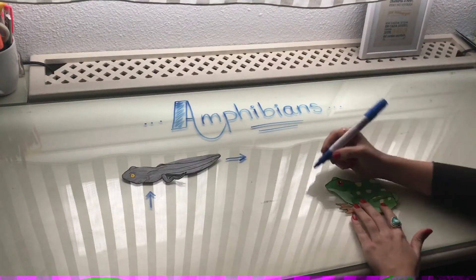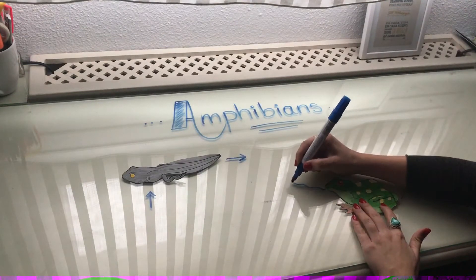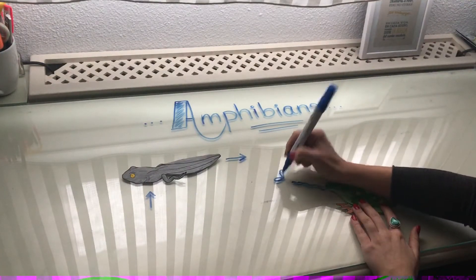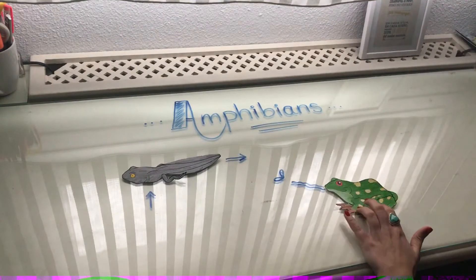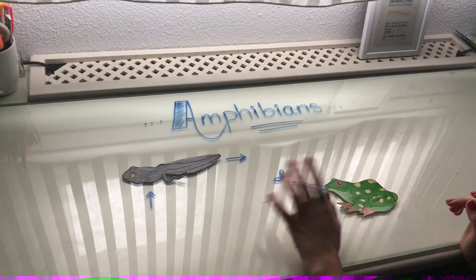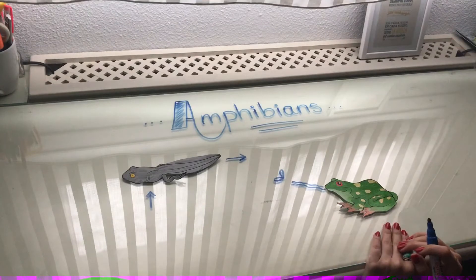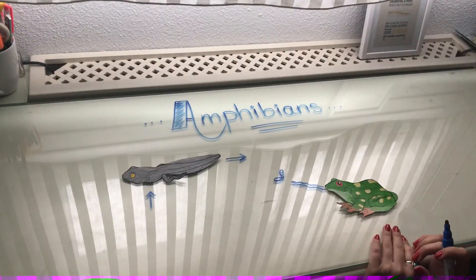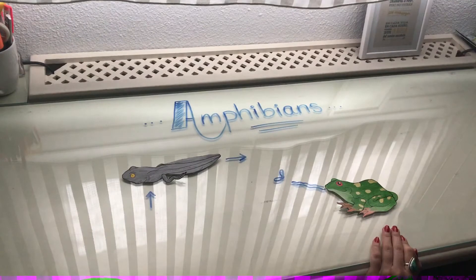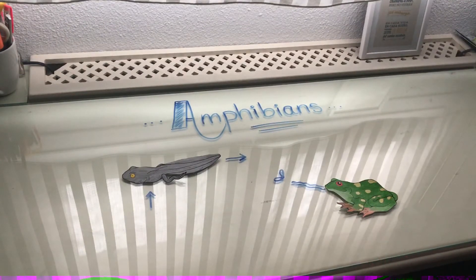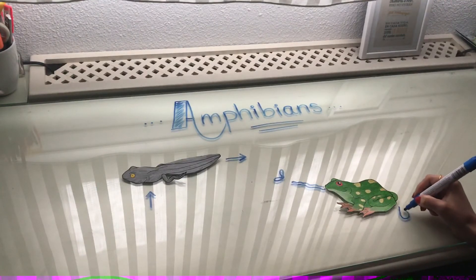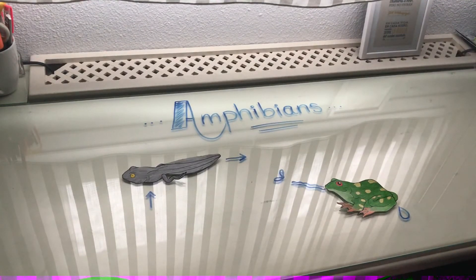Amphibians have got very long and sticky tongues. Do you know what for? Yes, to catch insects to eat, of course! If they are eating insects, what kind of nutrition do they have — are they herbivorous, carnivorous, or omnivorous? Yes, they are carnivorous because they eat other living beings. Also, amphibians lay eggs, so they are oviparous.